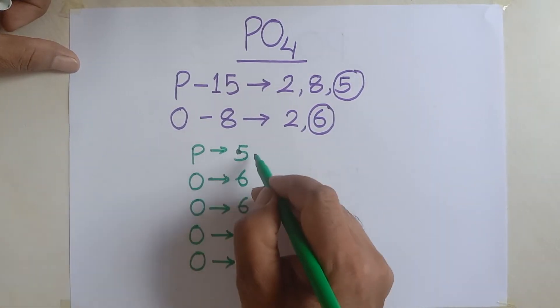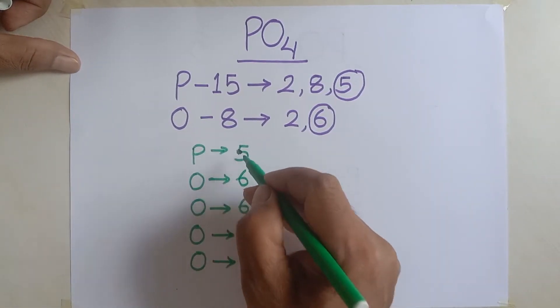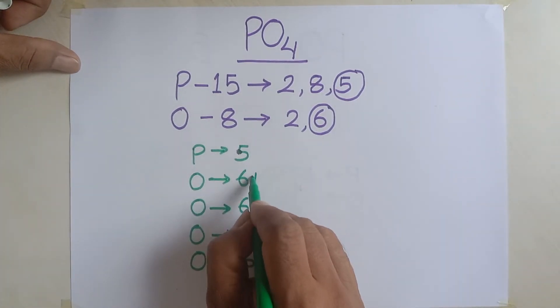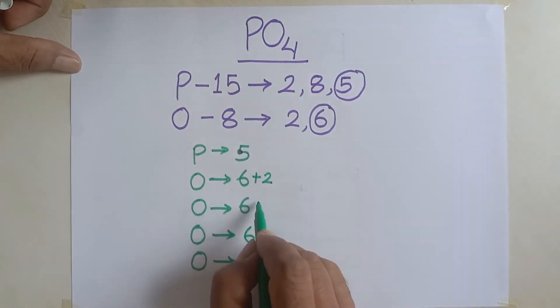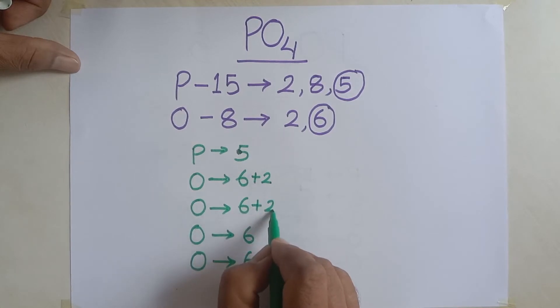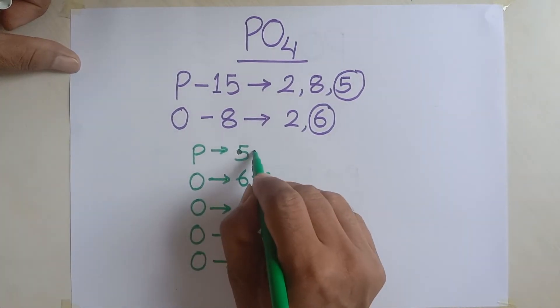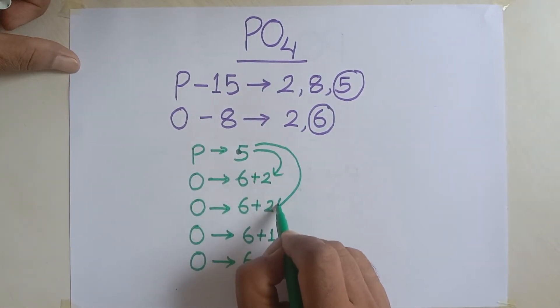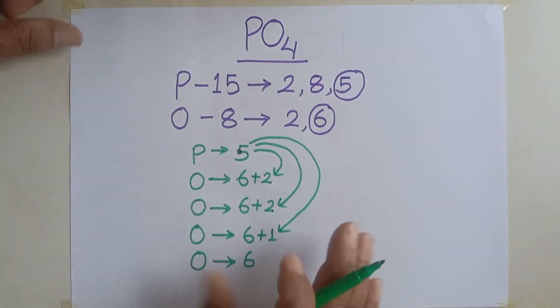Now, this phosphorus, five electrons, it is shared with oxygen. Let's say, two is shared here. And two is shared here. And remaining one is shared here. Here it is shared. Here two, here two and here one.